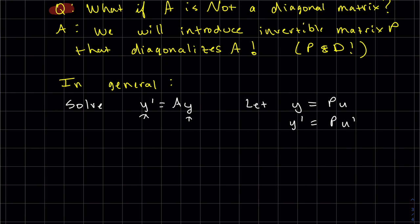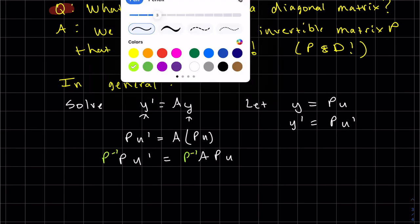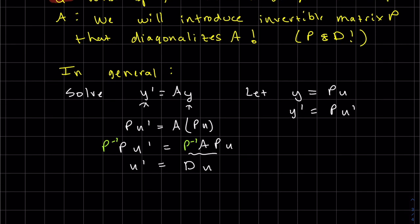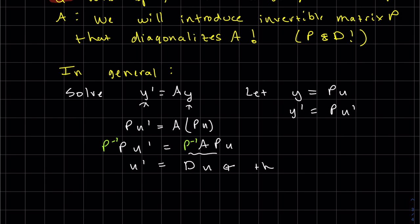So A instead of y, we put Pu for y. y prime is Pu prime. And then we solve for u prime. Take P inverse of both sides. This becomes u prime. Does that look familiar? That certainly does. That is your diagonal of eigenvalues. And there you go. Then it's the same process as above.